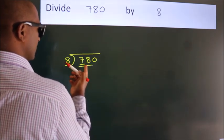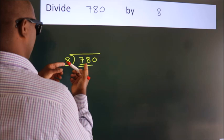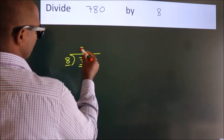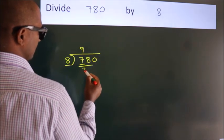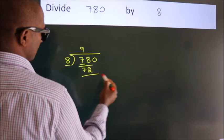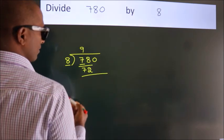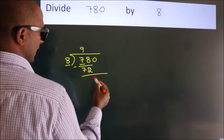A number close to 78 in 8 table is 8 nines 72. Now, we should subtract. We get 6.